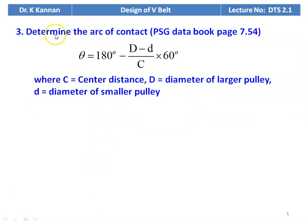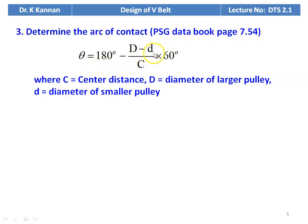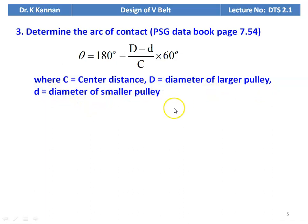Then determine the arc of contact. The equation is available on page number 7.54 of the PSG data book: theta = 180 − (D − d)/C × 60, where C is the center distance, D is the diameter of the larger pulley, and d is the diameter of the smaller pulley.